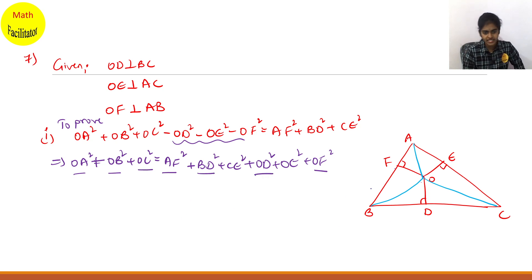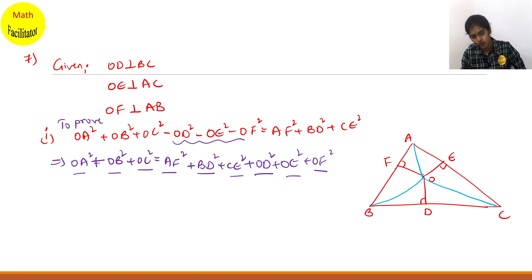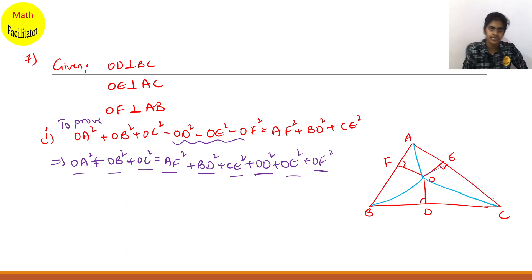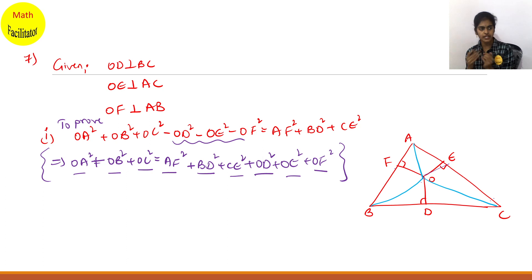If I take OC square, OC square equals OE square plus CE square. OE and CE are here. So from what I have to prove, I am taking this and then choosing the triangles accordingly. This step you will write in rough work so that you will know what to do next.